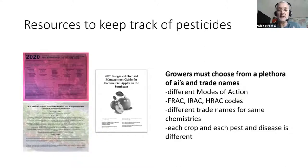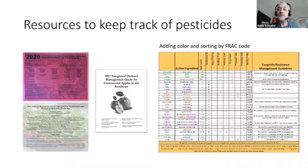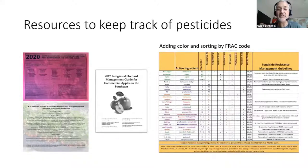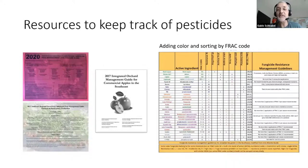You've got all these different modes of action, those IRAC and FRAC and HRAC codes, and those different trade names for the same chemistries. Each crop and each pest and each disease is different, and so for somebody who doesn't do this all the time, it can be very confusing. So I started creating spreadsheets to clarify this a little bit — maybe 10 years ago, creating those color codes. That was inspired by Andy Wyanand up north, who produced something similar for vegetables. I thought that was pretty cool, so I asked him if I could copy his idea, and I created that for strawberries and peach.